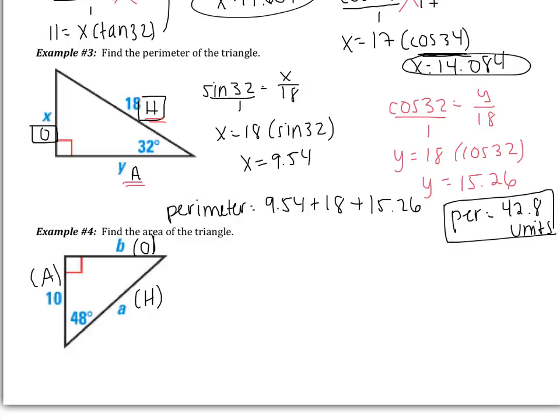Now I have to use 10 in both of my ratios because it's the only side I know. When I'm solving for A, for this little A, I have 10, which is the adjacent side, and then I'm going to look for the hypotenuse. So this is telling me I need to use cosine. So I have the cosine of 48 is equal to adjacent, which is 10, over the hypotenuse, which is A.